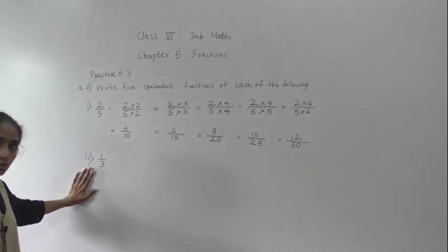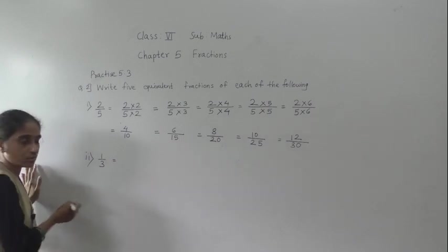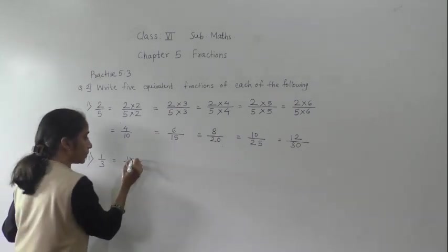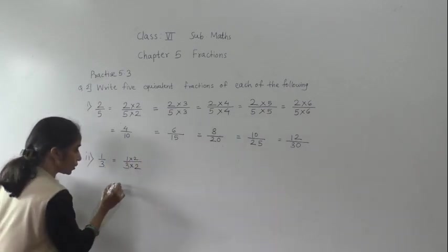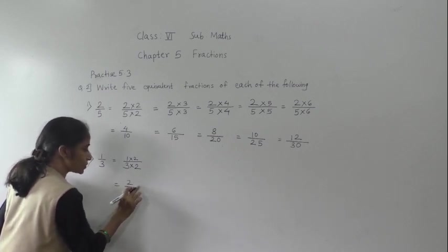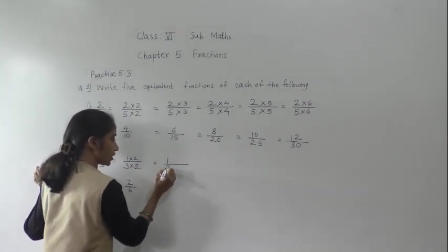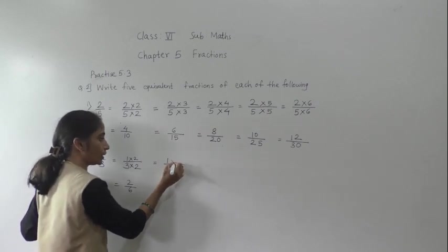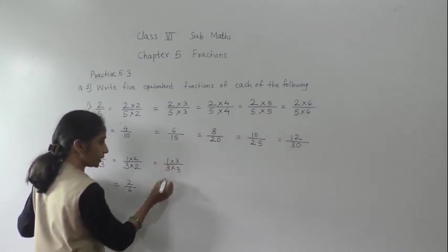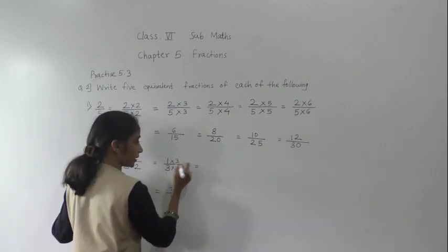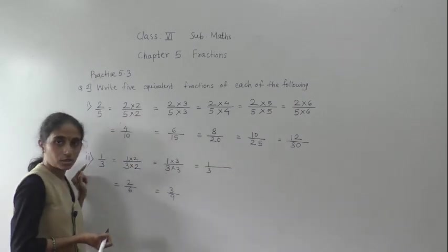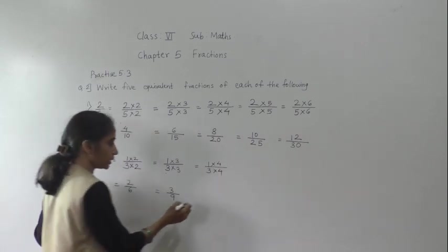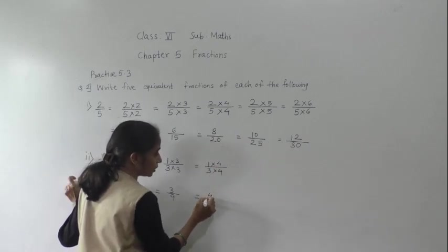Now let's solve another example. Given fraction is 1 upon 3. Multiply by 2: 1 two is 2 and 3 twos are 6, giving 2 upon 6. Multiply by 3: 1 three is 3 and 3 threes are 9, giving 3 upon 9. Multiply by 4: 1 four is 4 and 3 fours are 12, giving 4 upon 12.